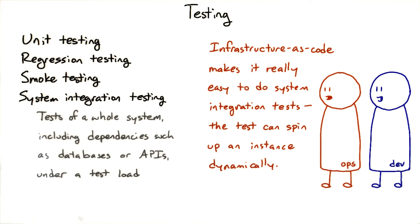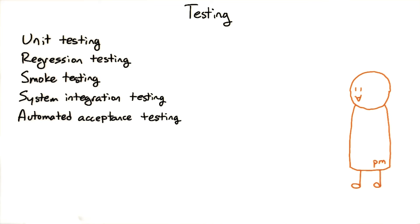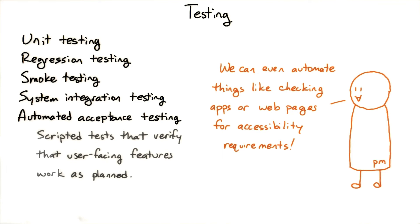But when we treat infrastructure as code, we can spin up test instances as VMs dynamically when we need to. In doing that, we'll test our deployment scripts too. An automated acceptance test is something that you'd write to verify that a system or a feature does what the user wants it to. Now, it can't replace everything that a human QA tester might do, but there are testing frameworks that let you automate quite a lot.